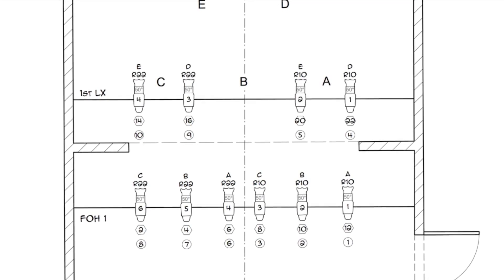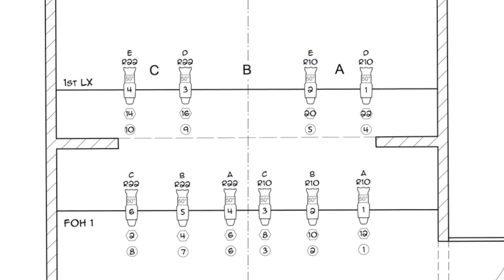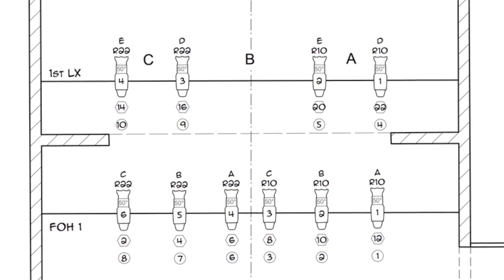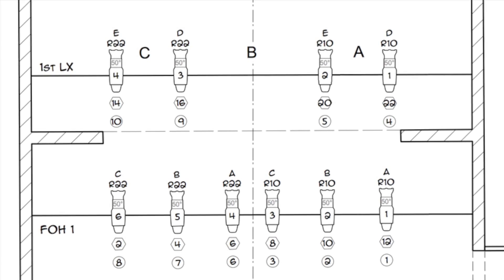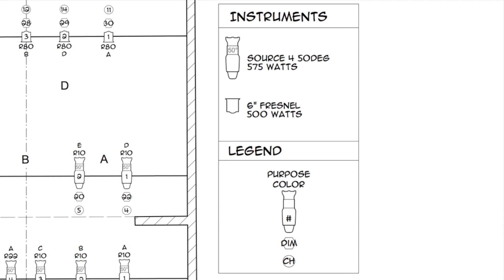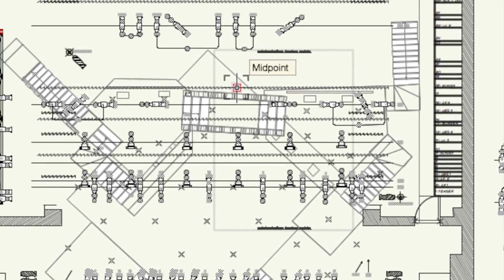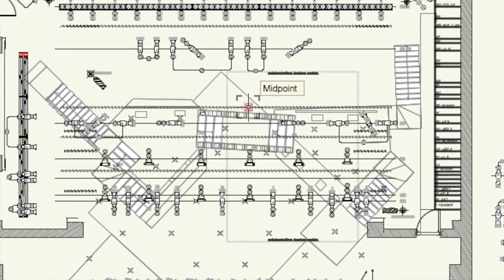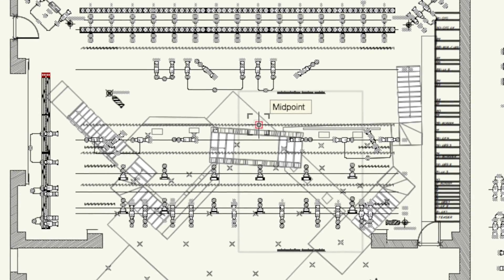Even looking at a simple light plot like this, you can notice that there's a lot of information to take in. Without having a specific frame of reference for understanding what all of those symbols and numbers mean, it could be difficult to interpret a light plot. That's where the lighting key comes in. The lighting key is a small chart that includes all of the necessary information for interpreting the symbols on a light plot. It should include an instrument key with a symbol for each type of lighting instrument included in the plot, as well as a legend that explains what all those little numbers and symbols mean associated with the lighting instruments. Once you have a good understanding of the process that goes into creating one, reading one is a lot easier.